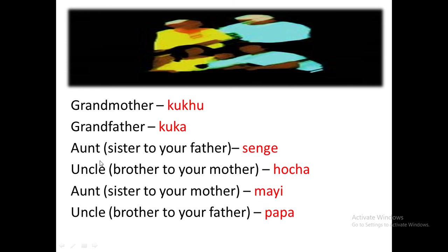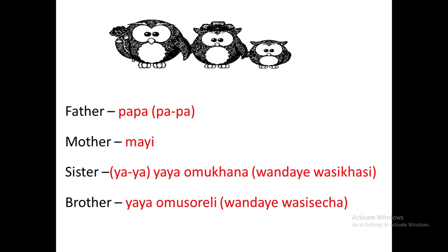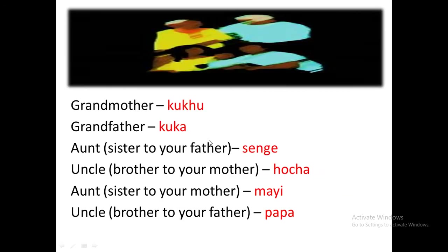For aunt and uncle, I've specified why I've repeated them. An aunt who is a sister to your father is referred to as 'senge'. An uncle who is the brother to your mother is called 'hocha'. It's both aunt and uncle, but the relationship with your mother or father determines how you call them. The aunt who is the sister to your mother is called 'myi myi' — since 'myi' is your own mother, your mother's sister is also your mother.